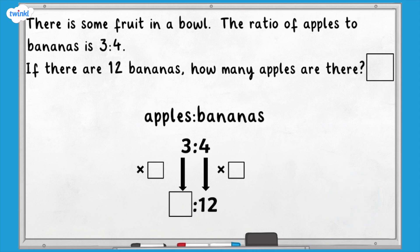We multiplied the number of bananas in the ratio by three to get 12. If we also multiply the number of apples in the ratio by three, we get nine. If there are 12 bananas, there are nine apples.